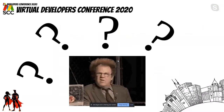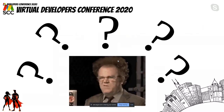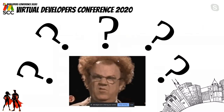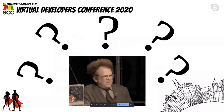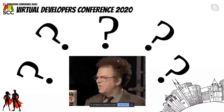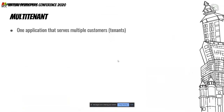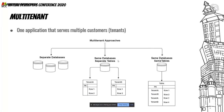This is where the multi-tenant approach comes into picture. A multi-tenant application is one that can serve multiple customers — multiple tenants. There are a few approaches to consider before moving to a multi-tenant application. The multi-tenant approaches are: separate databases, the same database but separate tables, or the same database and the same tables. Each has its own pros and cons.